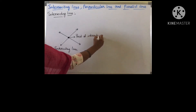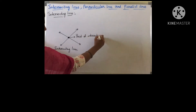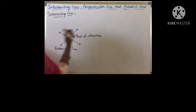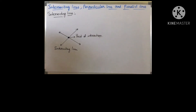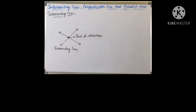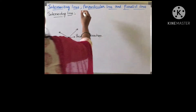The point where the two lines are meeting, that point is known as point of intersection. So coming to the definition, we can write: when two lines cross each other in a plane, they are called intersecting lines.